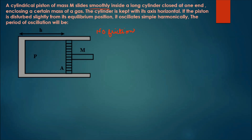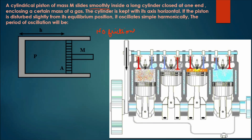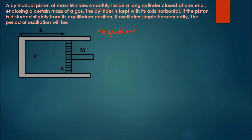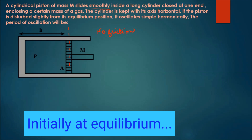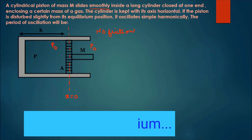We are given a cylindrical container with a frictionless piston. At the equilibrium position — I am marking this as x equal to 0, meaning displacement from equilibrium is zero — the pressure outside is atmospheric pressure p0, and the pressure inside is also p0. That is the reason the piston is not moving forward or backward.